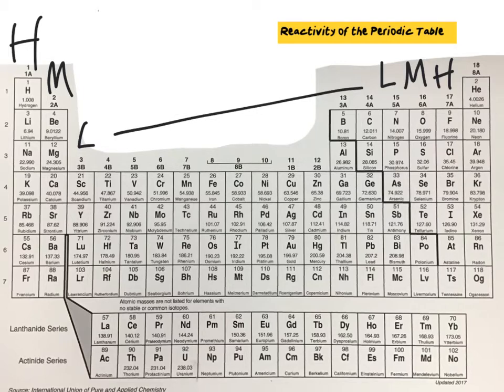The most reactive metal on the periodic table is going to be number 87, francium, and the most reactive non-metal on the periodic table is number 9, fluorine.